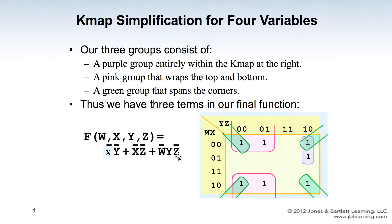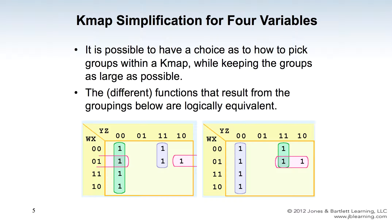It is possible to have a choice in how to pick groups within a KMAP while keeping groups as large as possible. As long as you follow the rule to group ones together, the way you group may be different but the results are equivalent. You may end up with a different boolean function after simplification, but they are all equivalent.